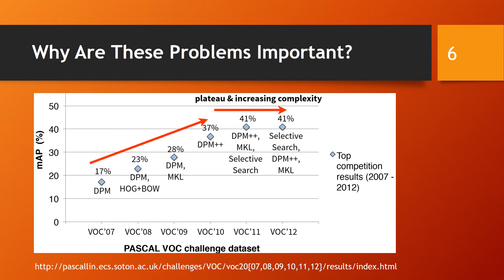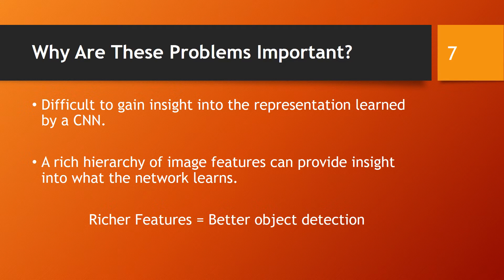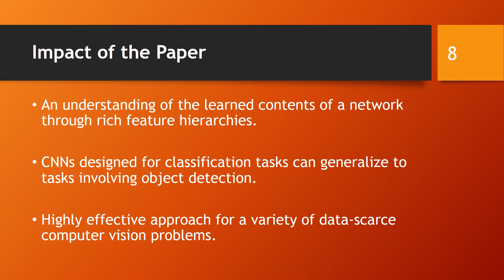So why are these object detection problems important? Between 2010 and 2012, the object detection performance on the Pascal VOC dataset had stagnated. At the same time, it was difficult to understand what a CNN learned. An idea of the paper was that hierarchical multi-stage processes for computing features could be more informative for various visual recognition tasks. The impact of the paper is that it proposes an approach that provides a rich hierarchy of image features, giving insight into what a network learns. Also, their approach closes the gap between image classification and object detection by showing that a CNN can generalize to object detection tasks.